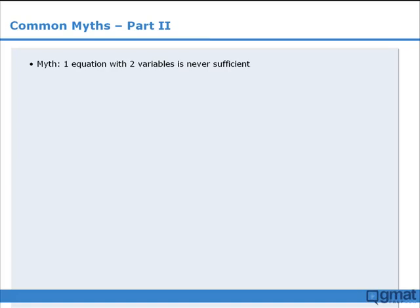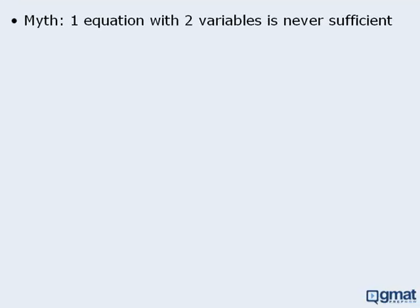In this lesson, we will examine two more common myths about data sufficiency questions. The first myth is that one equation with two variables never provides sufficient information in a data sufficiency question. Now granted, there are some cases where this rule does apply, but the problem is that it does not always apply.